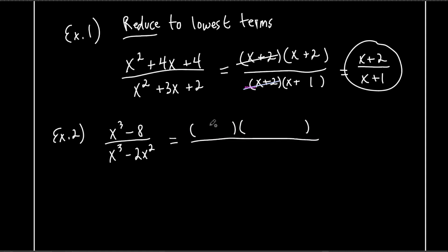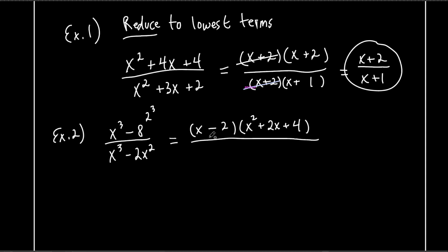For the difference of two cubes, x³ - 8: use same-opposite-positive for the signs. What's being cubed to give x³? An x. What's being cubed to give 8? A 2. So we get (x - 2)(x² + 2x + 4). For the ends, take x squared and 2 squared which is 4. For the middle, multiply x times 2 to get 2x. That's the difference of two cubes factored.